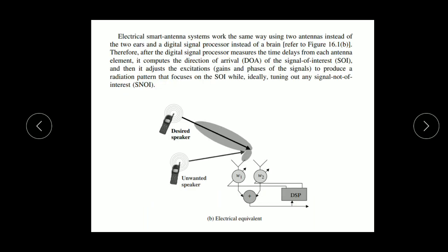Similarly, we discuss the electrical smart antenna system. It works the same way using two antennas instead of two ears — antenna 1 and antenna 2, the same as the two ears. The digital signal processor plays the role of the brain, and it automatically performs multiple tasks according to the user.